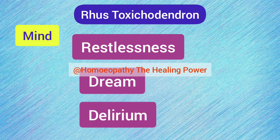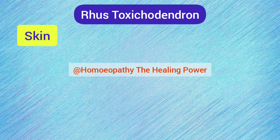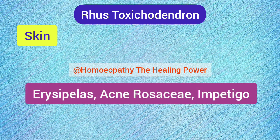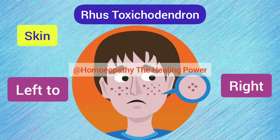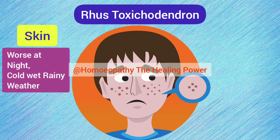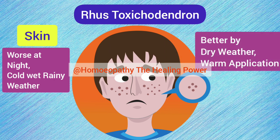Rhus Tox is a most important medicine for vesicular eruptions of skin and is indicated in almost all types of skin diseases — erysipelas, acne rosacea, impetigo, and many more. Skin complaints come from left to right, with much swelling, inflammation, burning, itching, and stinging pain. Complaints get worse at night and in cold wet rainy weather, and get ameliorated in dry weather and by warm application.